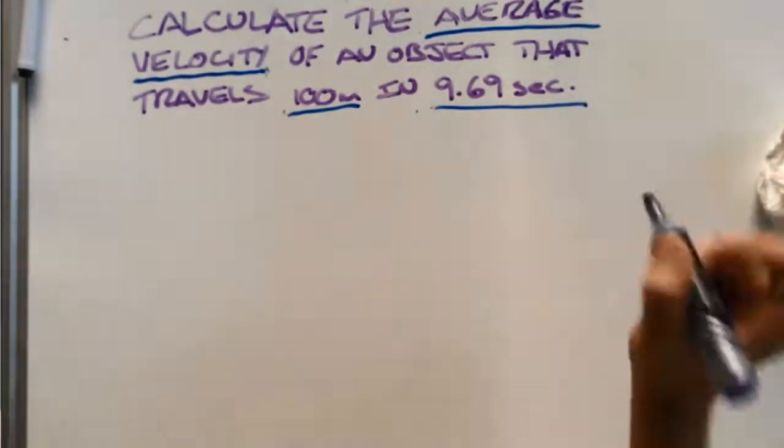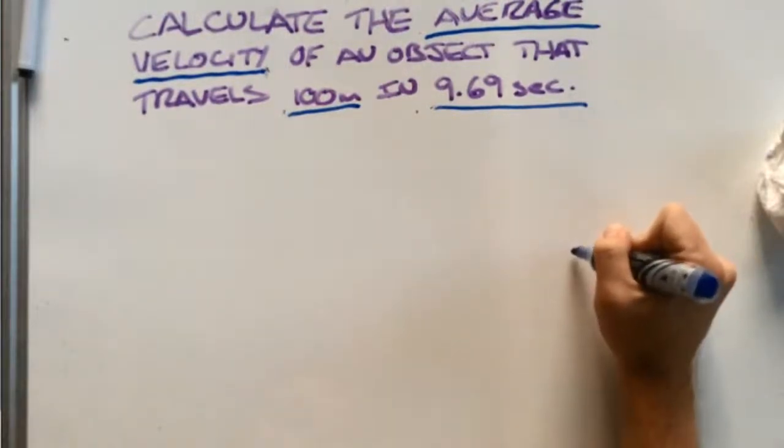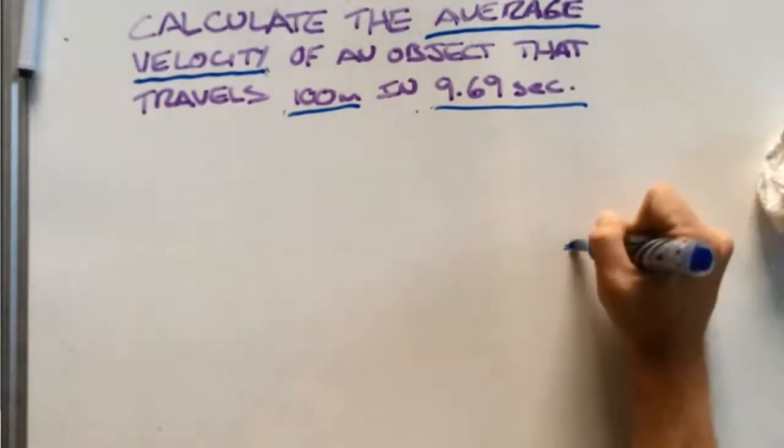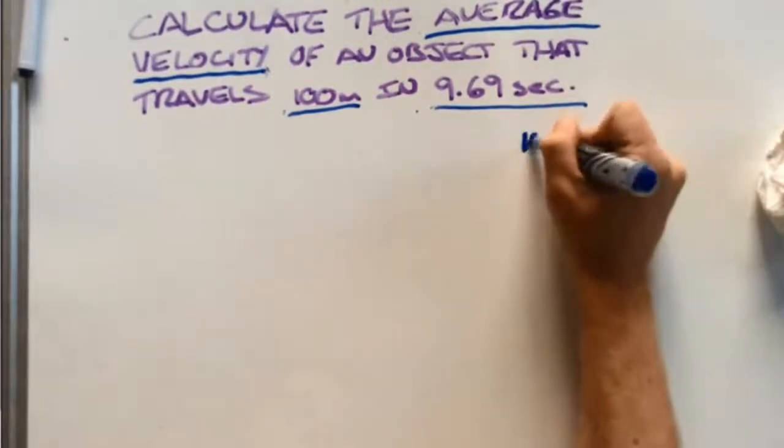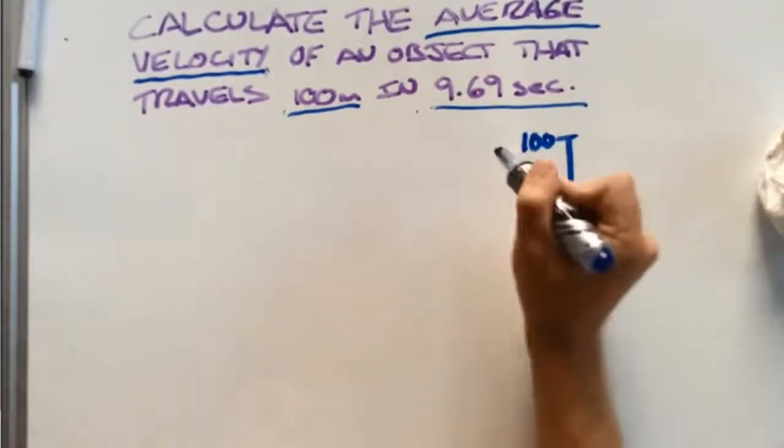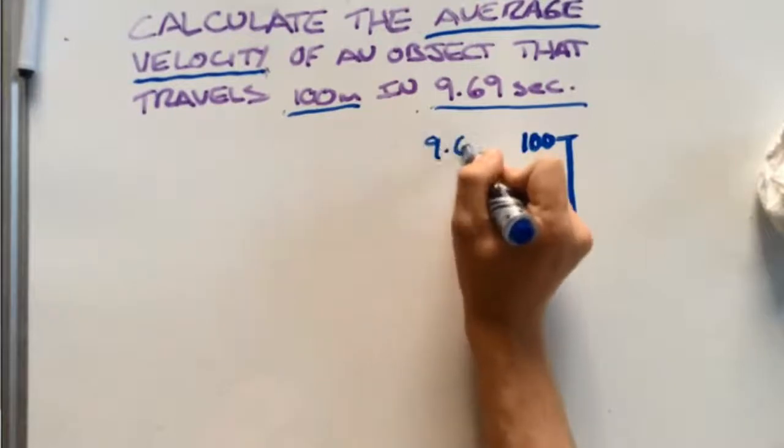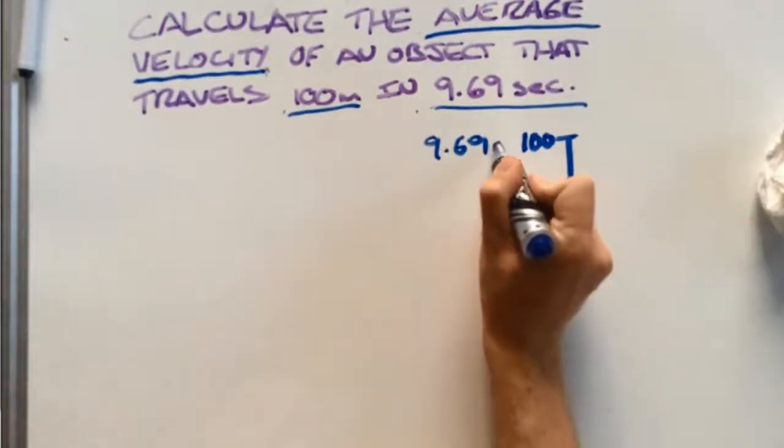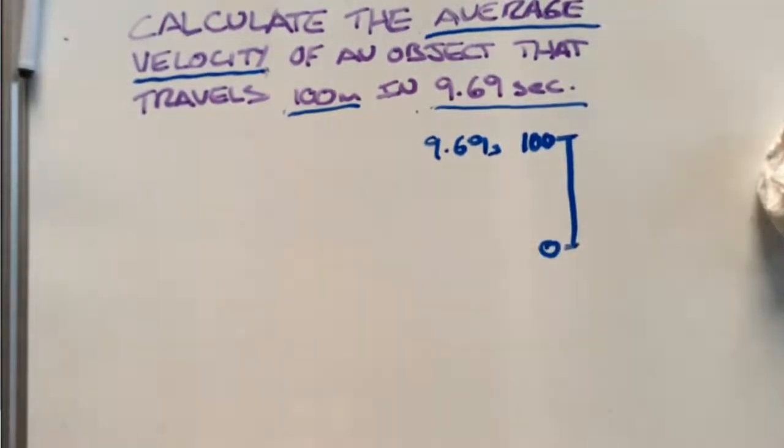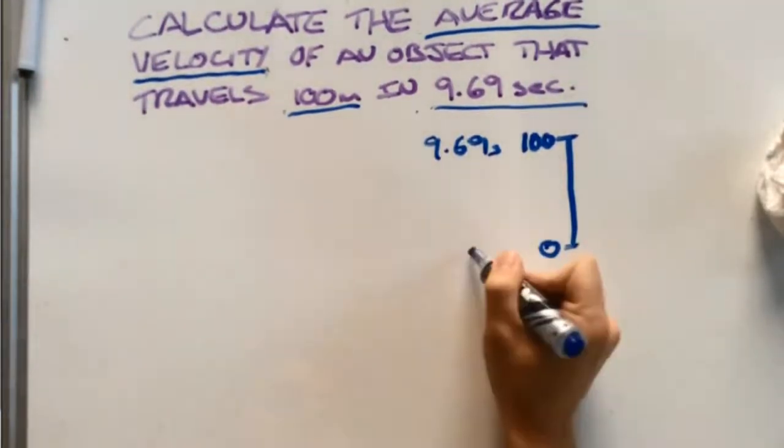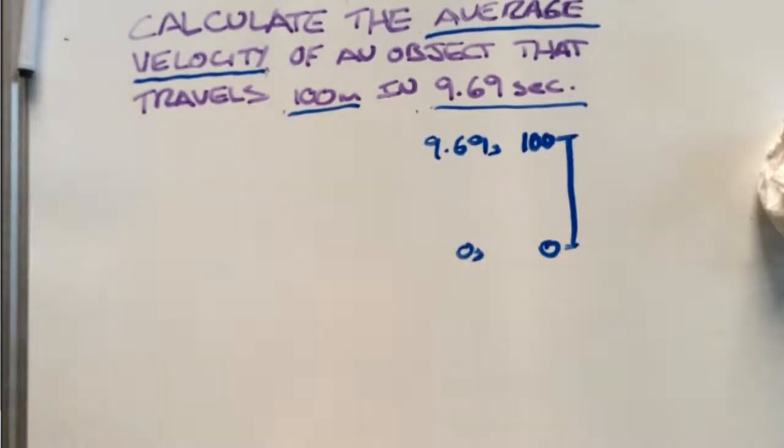So if we draw that out, we have something that begins and travels 100 meters in 9.69 seconds. This means that it's going to also start at zero meters and zero seconds.